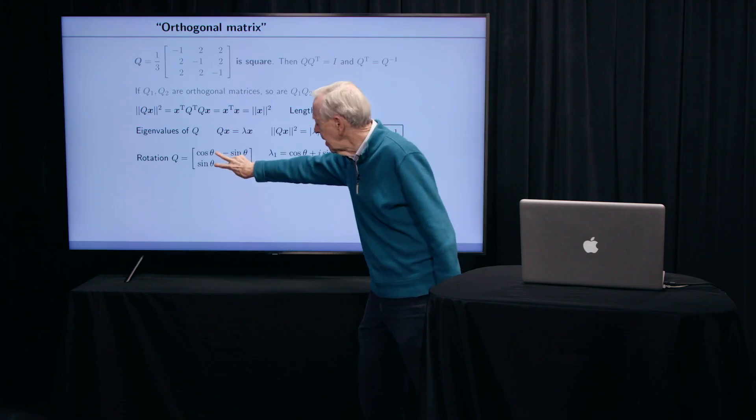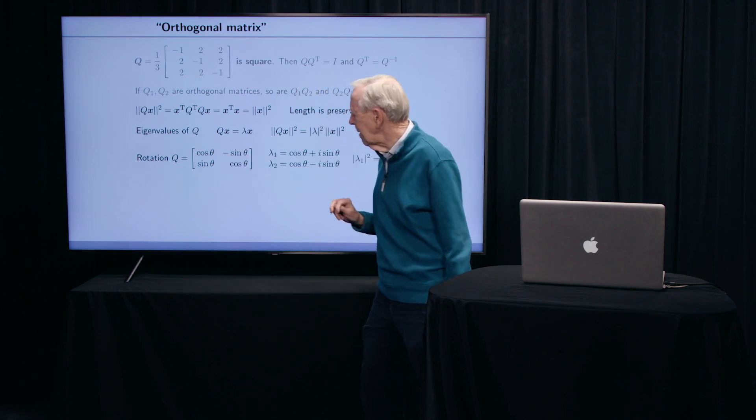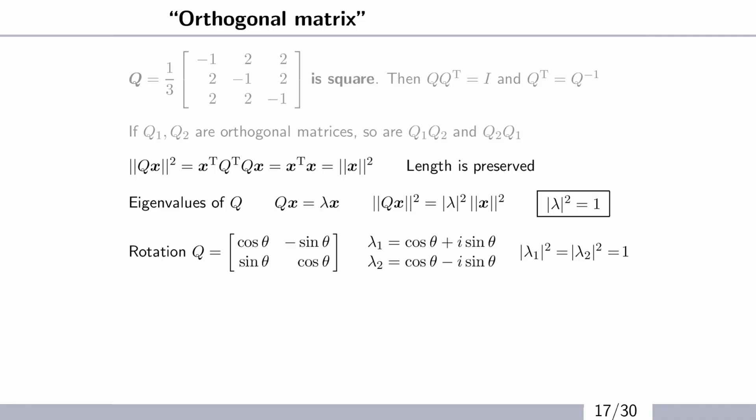It's also orthogonal because the dot product between that one and that one - you're OK for the dot product? That product gives me minus sine cosine plus sine cosine, which is 0. So column 1 is orthogonal to column 2.